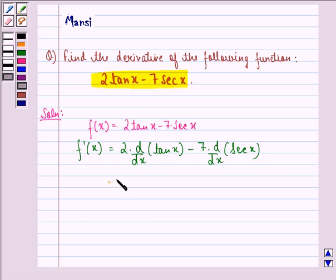This is equal to 2 into, now d/dx of tan x is sec² x, minus 7 into d/dx of sec x, which is sec x tan x.